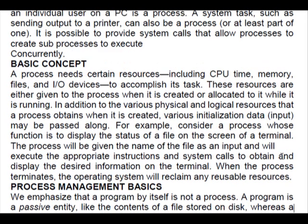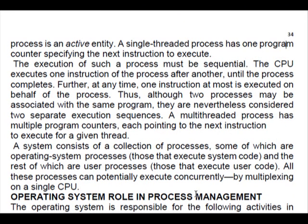Now, let us see process management basics. We emphasize that a program by itself is not a process, as we already discussed — a process is an active entity. A single-threaded process has one program counter specifying the next instruction to execute, and the execution of such a process must be sequential. The CPU executes one instruction of the process after another until the process completes. At any time, one instruction at most is executed on behalf of the process. Although two processes may be associated with the same program, they are nevertheless considered two separate execution sequences.